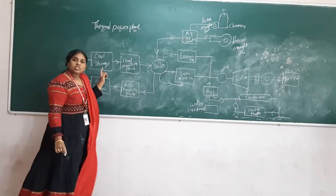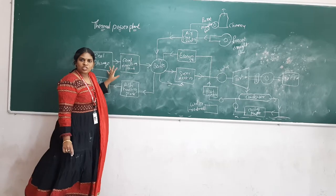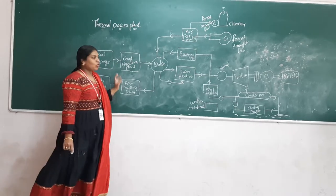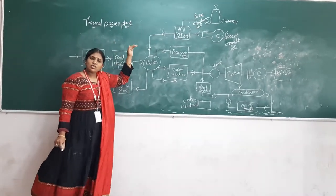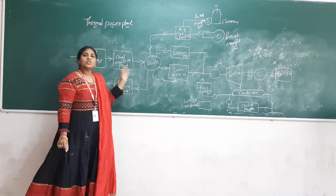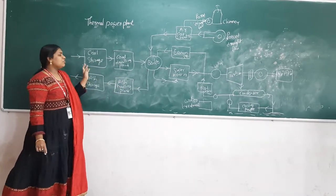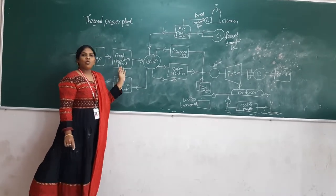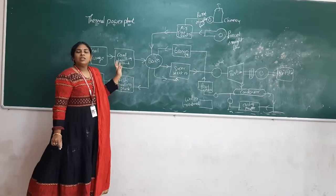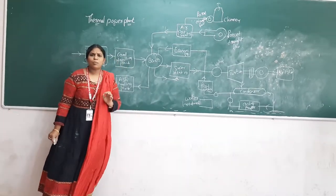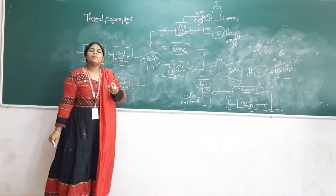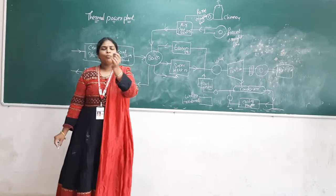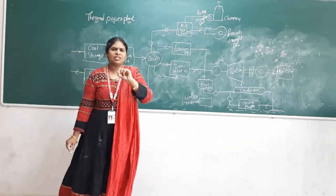First is the coal storage plant. We will store the coal first, because if there is any scarcity of coal, the thermal power plant should not go into shutdown mode. From this coal storage plant, the coal is fed to the coal handling plant. Here the coal is pulverized into small minor particles — even fine powder particles.